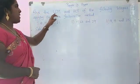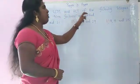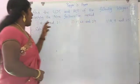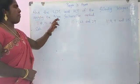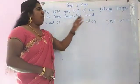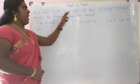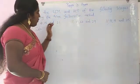Find the LCM and HCF of the following integers by applying the prime factorization method. We want to find the LCM and HCF. We have three questions.